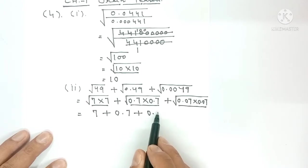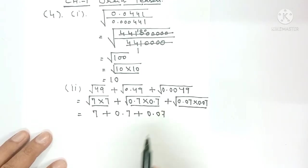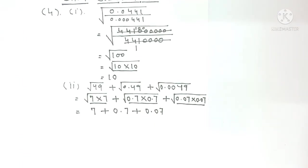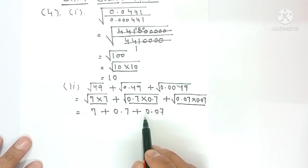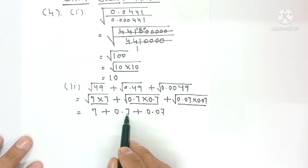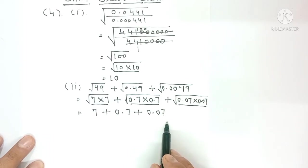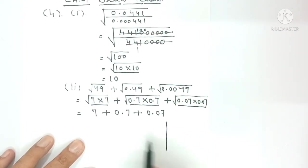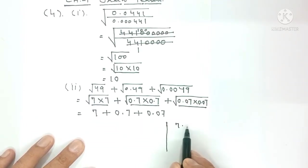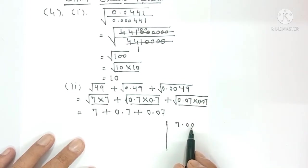Now you need to add these. To add, look at the maximum digits after the decimal. Here there's one digit after decimal, and here there are two digits.